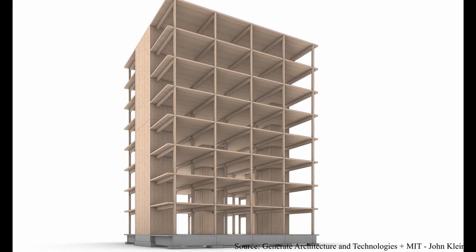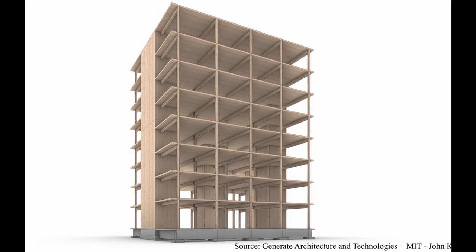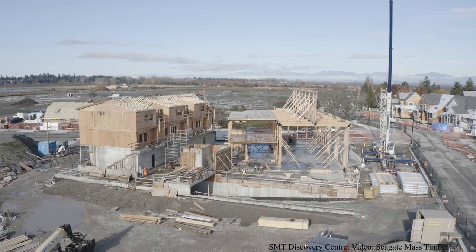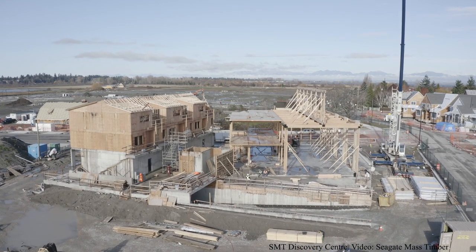One last thing to point out: the 2021 IBC introduces new construction types — 4A, 4B, and 4C — which allow taller mass timber buildings than previously permitted. It's worth noting, especially for Type 4C, that these new types are not meant to replace existing construction types for mass timber. I've heard designers say they want to use Type 4C because exposed mass timber is allowed throughout, even for a five or six story building — and I would caution against going down that route unnecessarily.